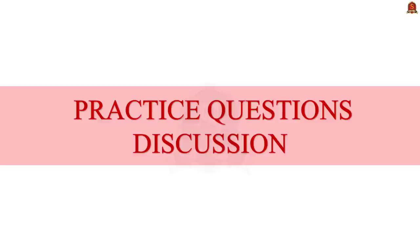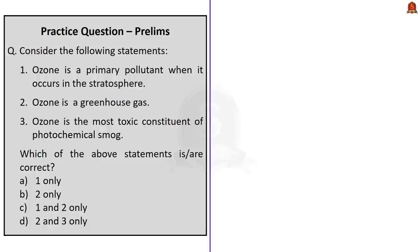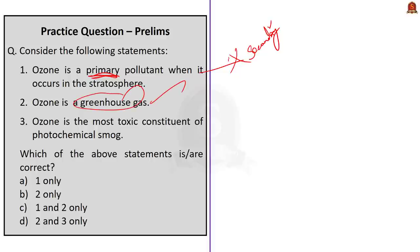Practice preliminary questions: Q1 — Ozone is a primary pollutant when it occurs in the stratosphere (wrong — it is a secondary pollutant in the troposphere); Ozone is a greenhouse gas (correct); Ozone is the most toxic constituent of photochemical smog (correct). Answer: Option D, two and three only. Q2 — Leopards are listed as endangered on IUCN Red List (wrong — they are listed as vulnerable); Grizzled giant squirrel is listed as vulnerable on IUCN Red List (wrong — it is near threatened). Answer: Option D, neither one nor two.